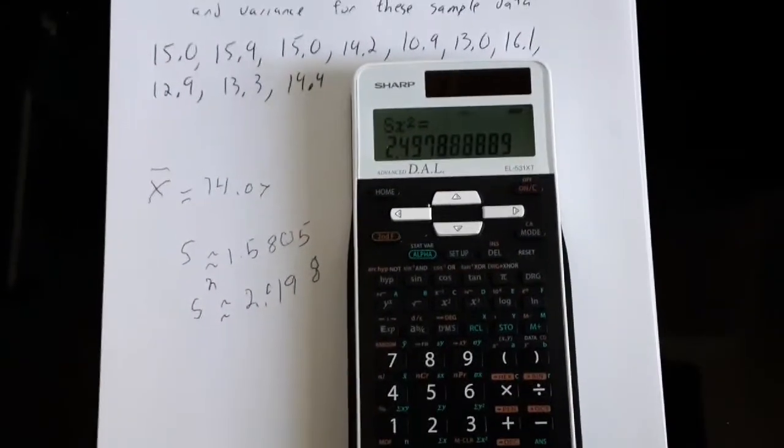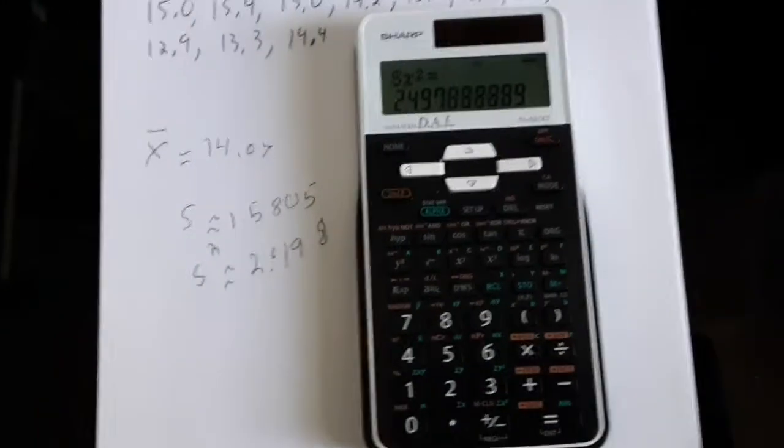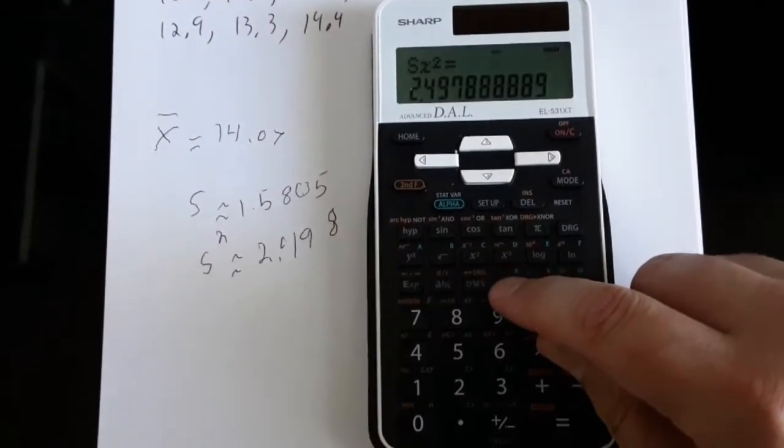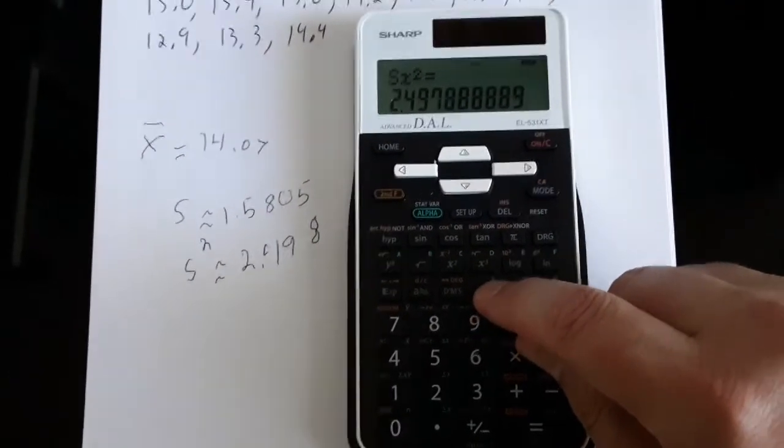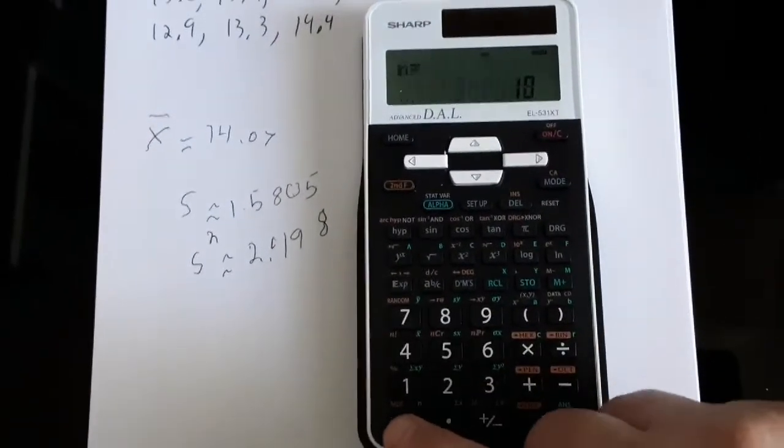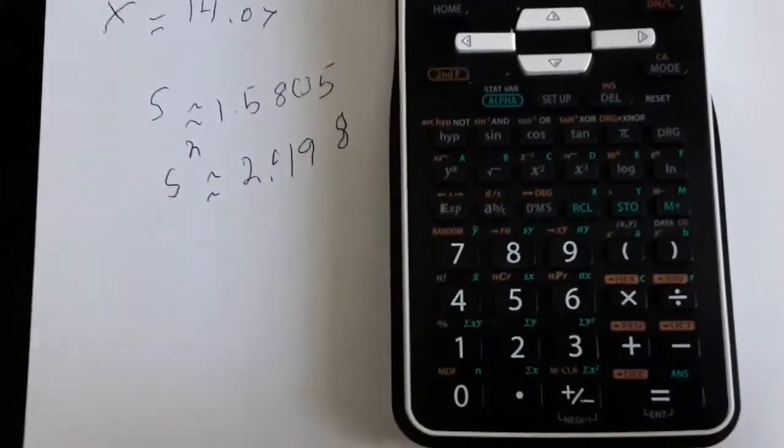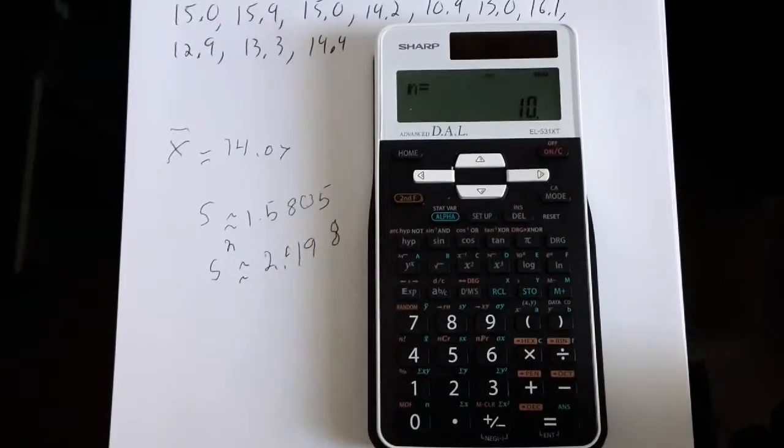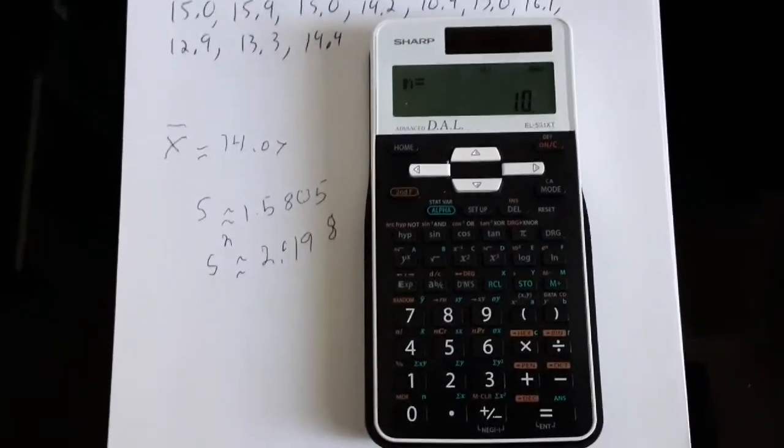A couple of things just to mention about this as well. If you have forgotten your sample size, I know it's been only a couple of minutes, but let's say we've forgotten, how many things were there? We can enter recall zero, because right above the button zero, you can see in green N for sample size, and it confirms that you've got 10 things in the calculator's memory.